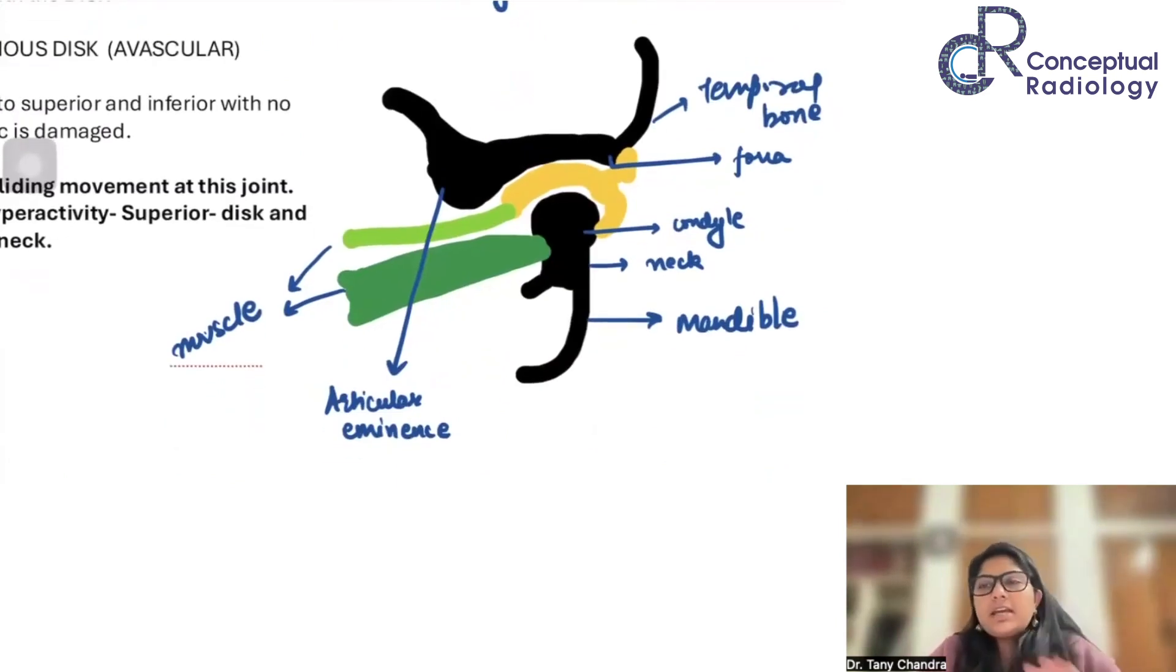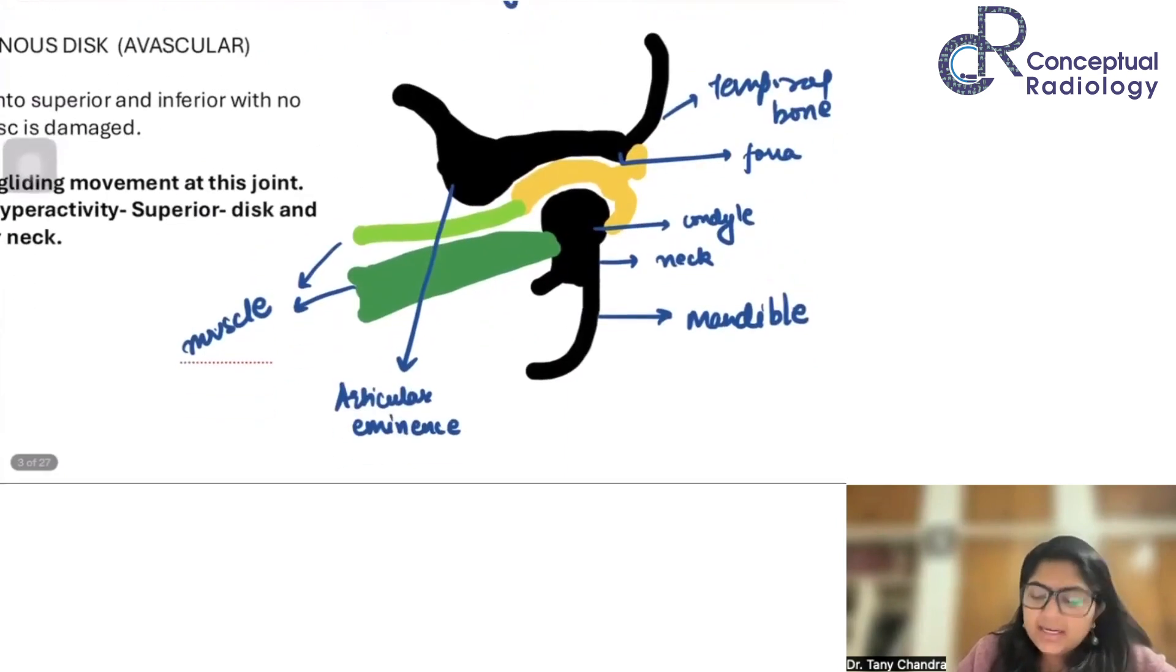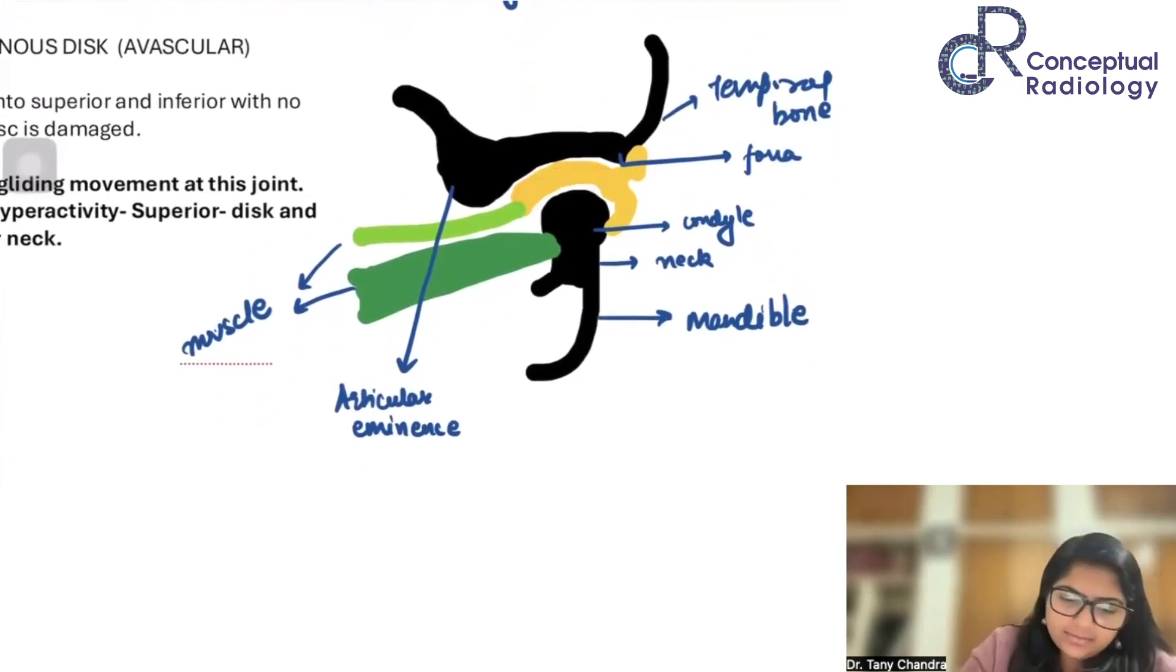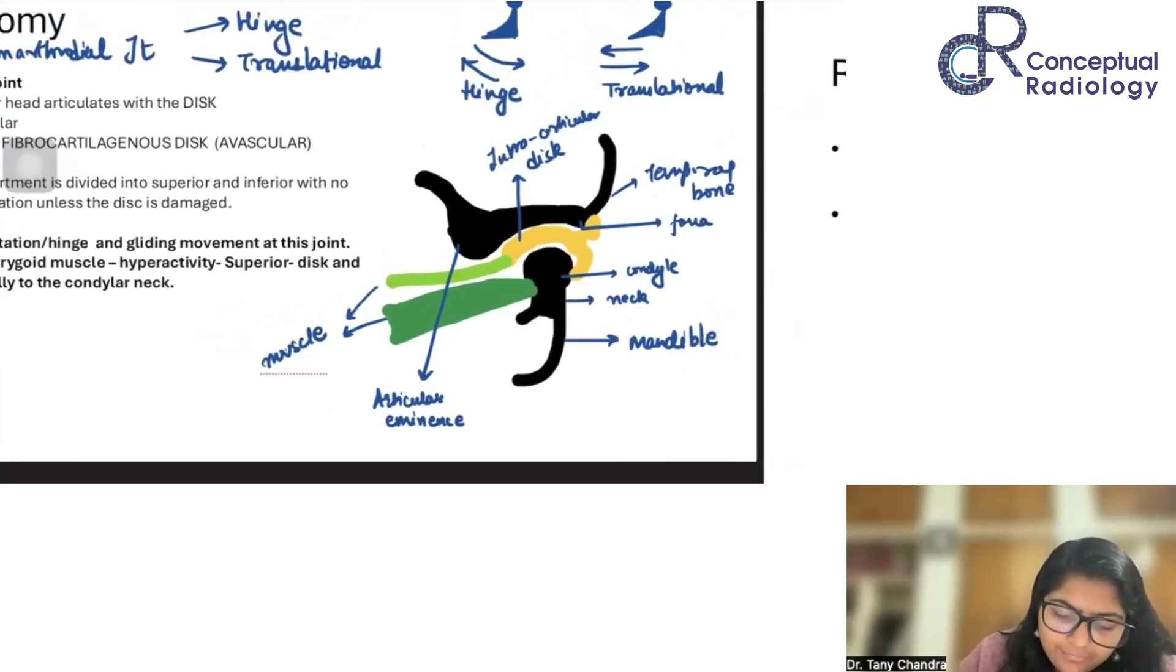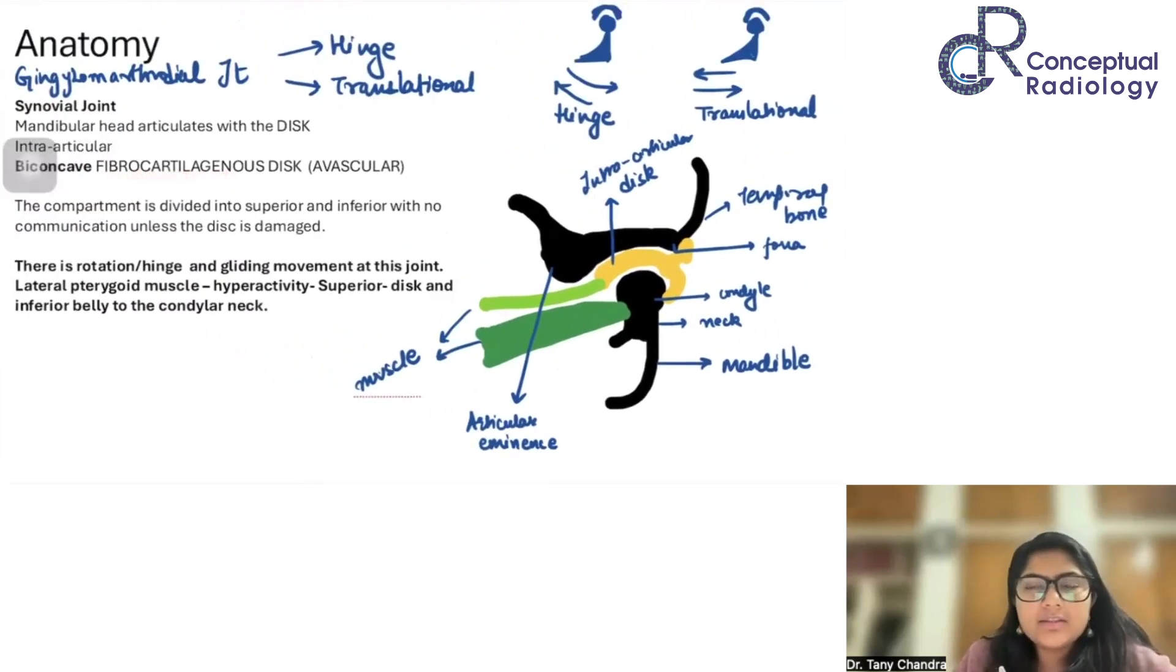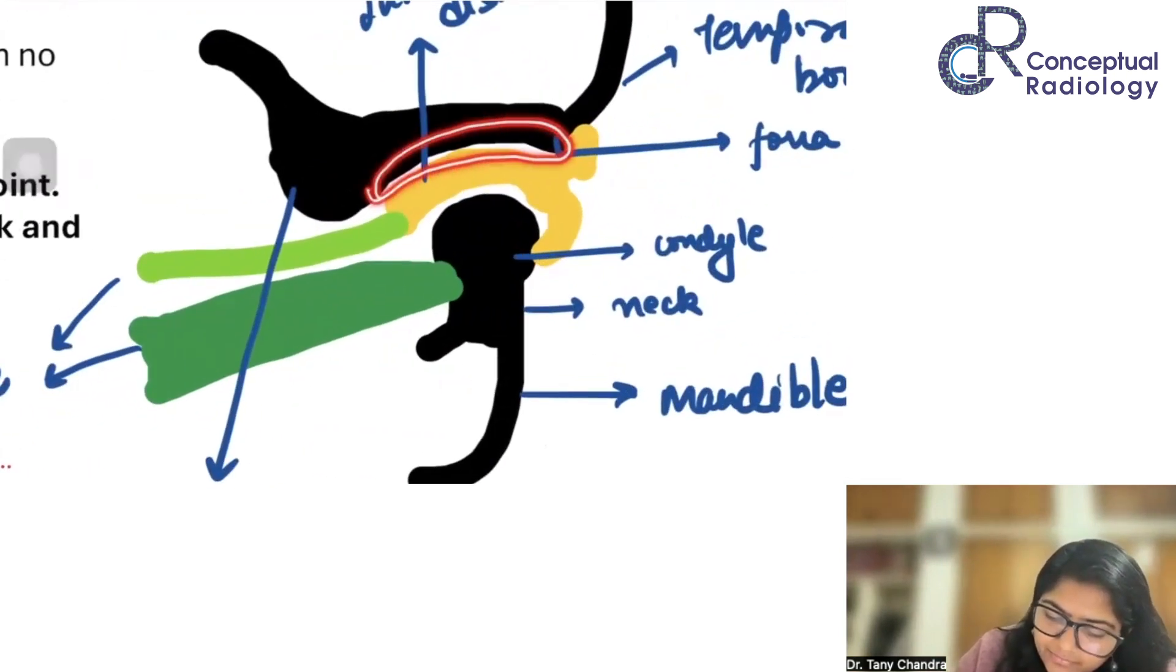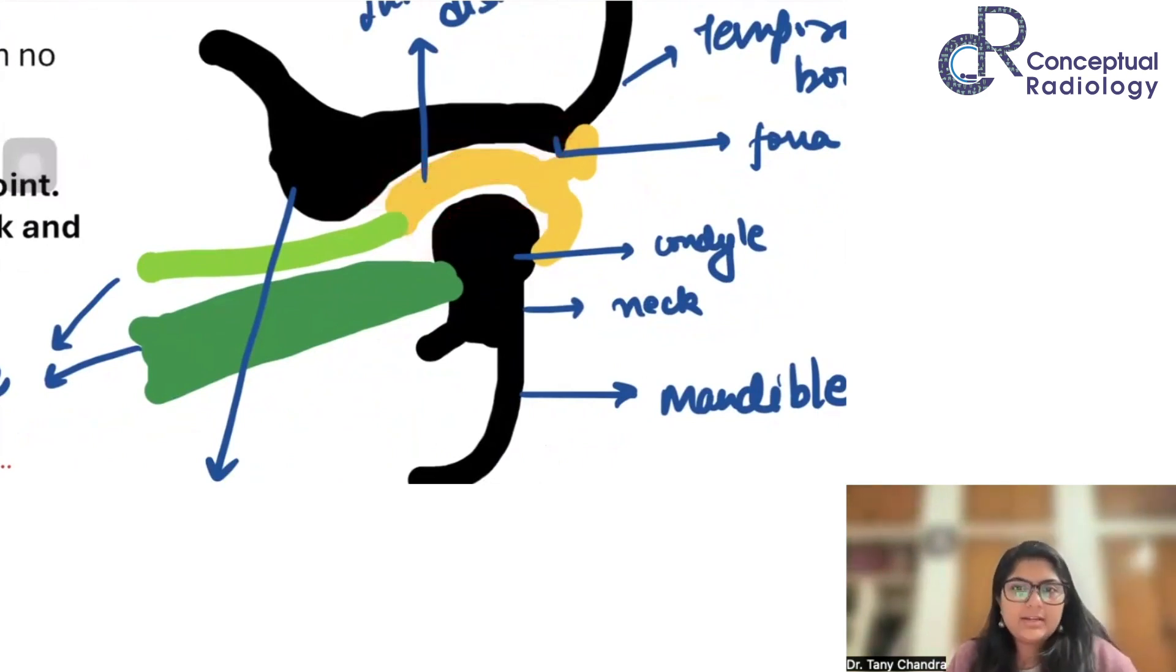Once we have understood that there are two bones, these are forming the joint. Now, we need to have something which is going to allow this movement to go well. There is going to be a synovial lining, because this is a synovial joint. Next, we need something which is going to act like a shock absorber. And which is this intra-articular disc. This is really very important. Here, this disc is actually made up of a fibrocartilaginous type. Usually what happens is we find hyaline cartilage, but here we find a fibrocartilaginous disc. This disc is actually dividing the joint into a superior part and an inferior part. These are the two compartments which have been divided by this disc.